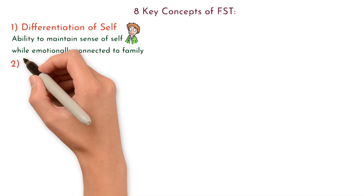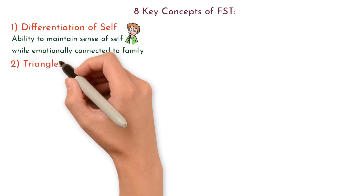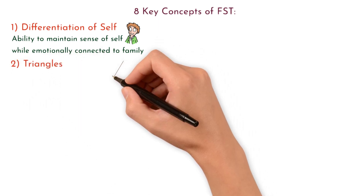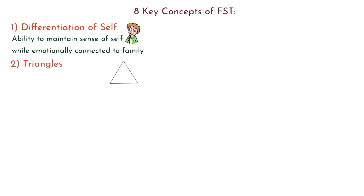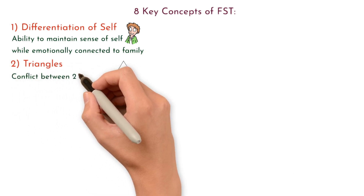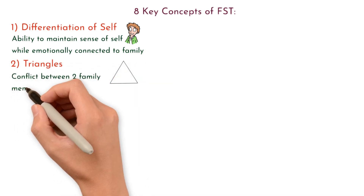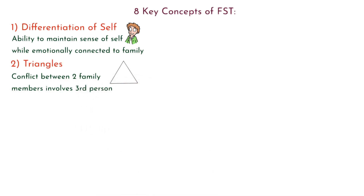2. Triangles. A triangle occurs when a conflict between two family members involves a third person to reduce tension. Triangles are the basic building blocks of a family's emotional system.